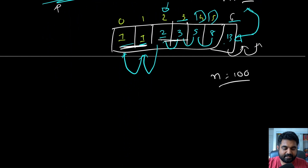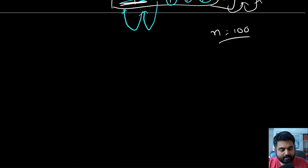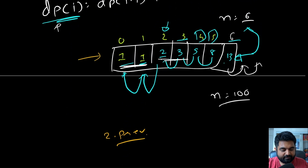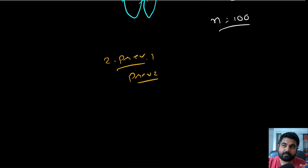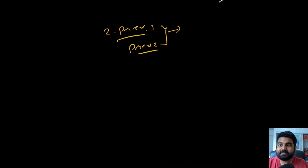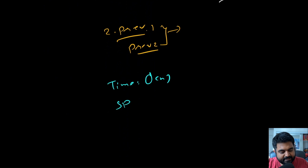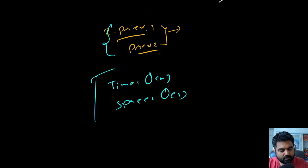We can further optimize space. Since we only need the two previous values at any time, instead of an entire array we can use just two variables: previous one and previous two. We update them for each step. This gives us a time complexity of O(n) and space complexity of O(1).